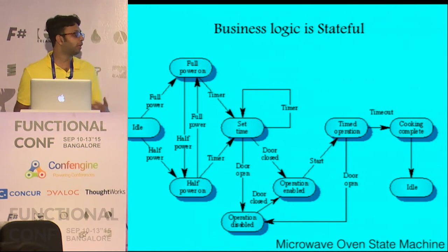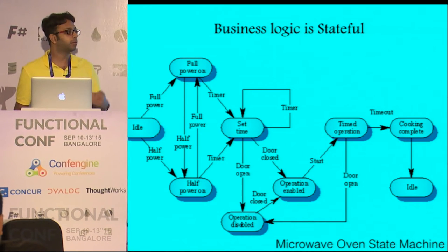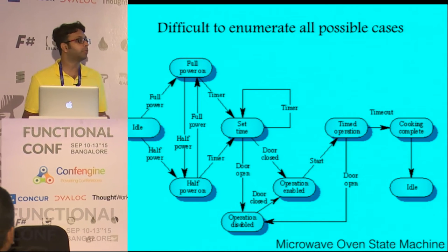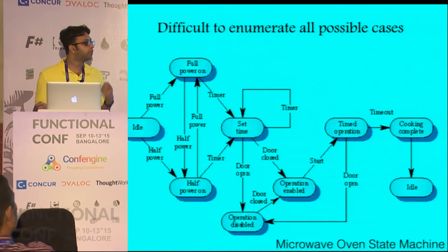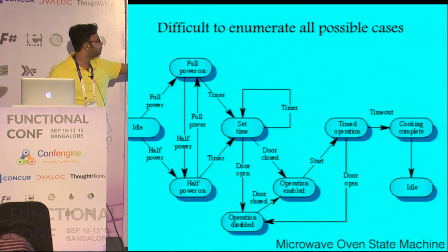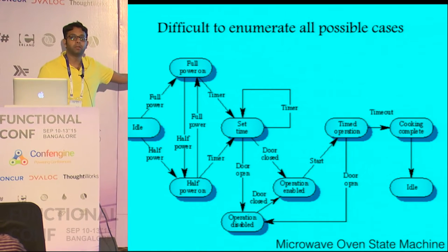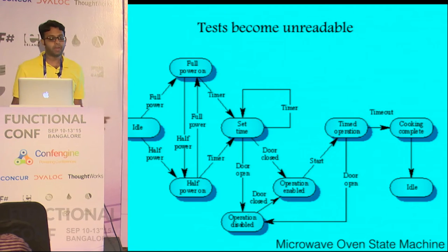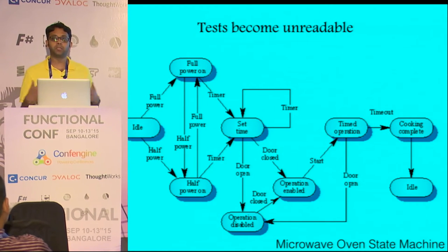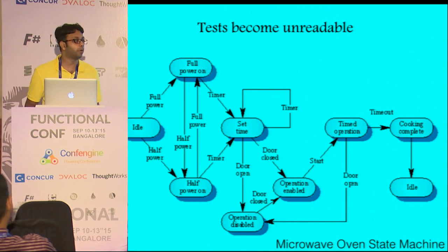Even if you have a functional programming language or any of that sort, you still need to test against a certain state. And it becomes difficult to eliminate all possible combinations — how many times should you set the timer back? You might not encounter a bug if you set the timer once, but the third time there might be a bug. And if you try to eliminate all possible combinations, the tests become very unreadable and really hard to reason about.